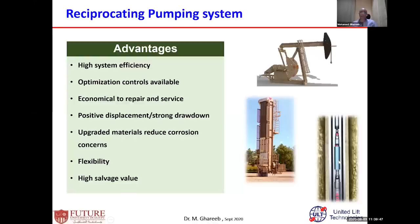If you have any downhole failure, you need a workover rig. But 75% of your CAPEX is paid for the surface equipment and 25% for the downhole pump — while 90 to 95% of artificial lift failures are downhole. Then your surface equipment is under your eyes and easy to maintain and repair without needing a rig. It is a positive displacement pump, providing strong drawdown. In each stroke, it displaces a certain volume of fluid — one stroke after another. It is not affected hydraulically by back pressure the way centrifugal pumps like ESPs are. It can reduce the bottom hole flow pressure to just a few PSI.